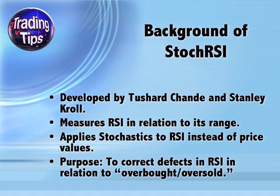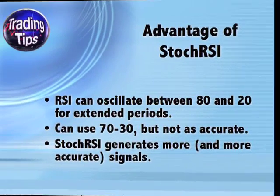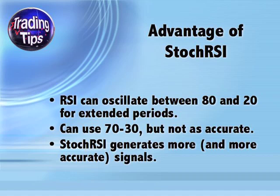The purpose of Stochastic RSI is to correct defects in RSI in relation to its overbought and oversold signals. The problem with RSI is that a stock's RSI can oscillate between 80 and 20 for extended periods without ever dipping into the overbought or oversold values of 80-plus or less than 20. To correct this, some traders use 70 and 30 instead of 80 and 20, but using these values has been shown to be much less accurate. So a trader sticking to the 80/20 rule might stay on the sidelines too long, missing many good trades.